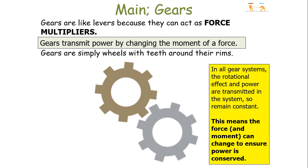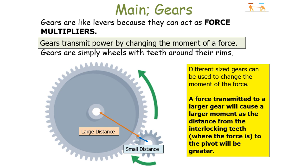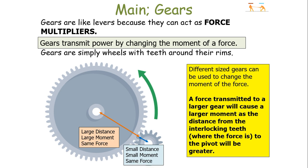Different size gears can be used to change the moment of the force. A force transmitted to a larger gear will cause a larger moment, as the distance from the interlocking teeth — where the force is exerted — to the pivot will be greater. A larger distance gives a larger moment; a small distance gives a small moment. We know this because both wheels must have the same force exerted upon them — this is Newton's third law in action. They exert an equal but opposite force on each other, so the force is the same size but in the opposite direction, causing the opposite rotation.